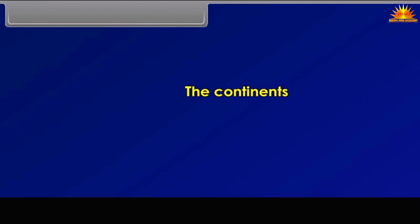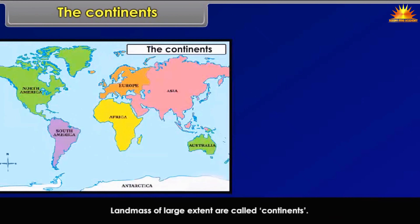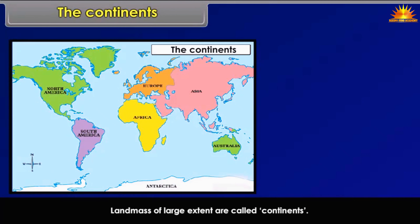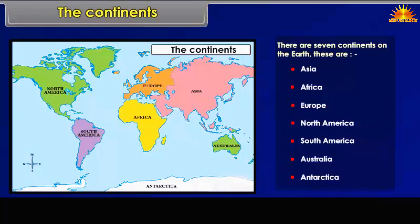Land masses of large extent are called continents. There are seven continents on the Earth: Asia, Africa, Europe, North America, South America, Australia, and Antarctica.